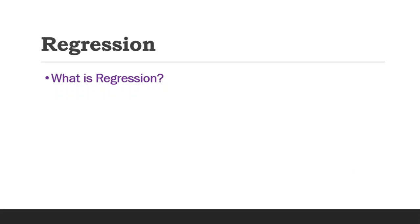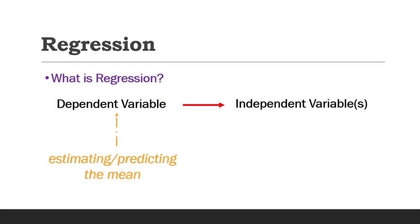Regression is the study of the dependence of one variable, known as the dependent variable, on one or more other variables, known as the independent variables, with the aim of estimating or predicting the mean of the dependent variable in terms of the known or fixed values of the independent variables. To exemplify this definition...